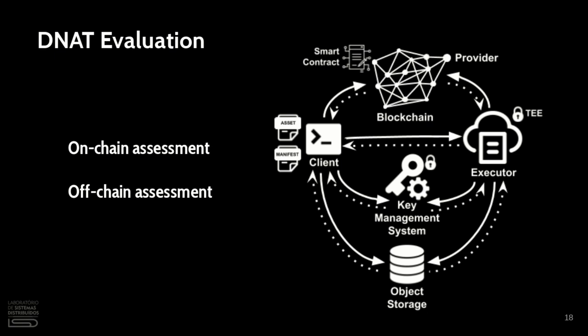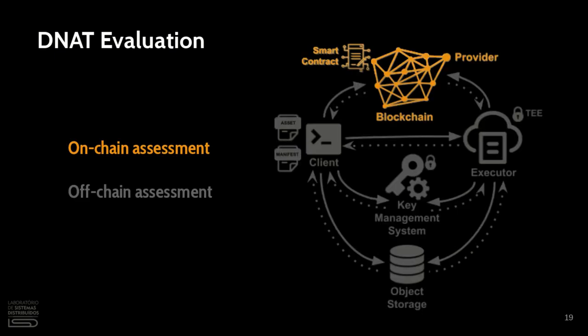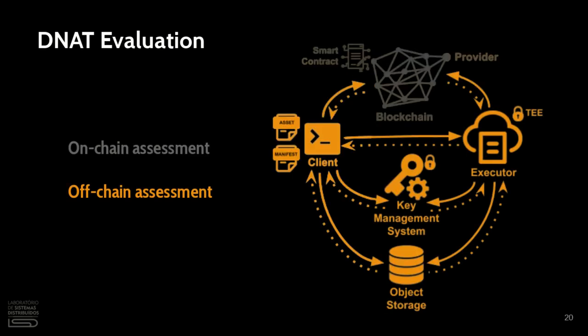When some operation changes the state of a smart contract, this means that it has an on-chain component. When an operation needs to perform any computation outside of the smart contract, this means that it has an off-chain component.